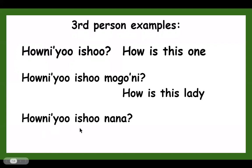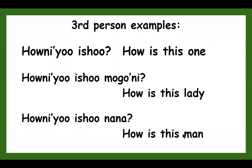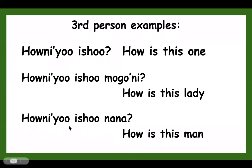Honniya ishu nana — honniya ishu nana — means 'how is this man?' Excuse me, honniya means 'how is it,' ishu means 'this,' nana means 'man.' How is this man? Honniya ishu nana.